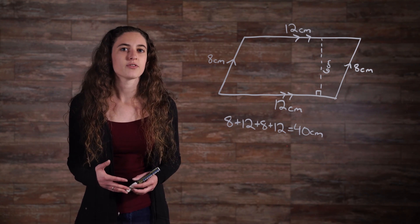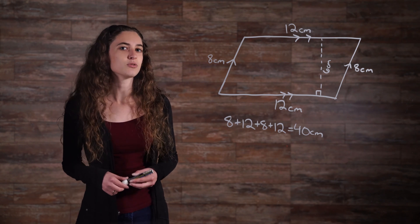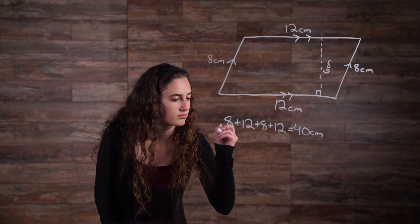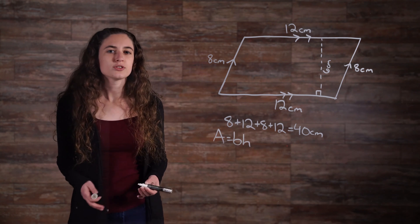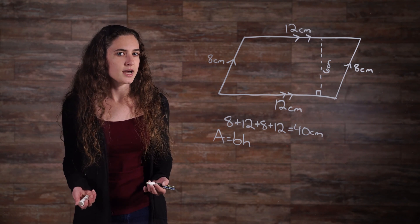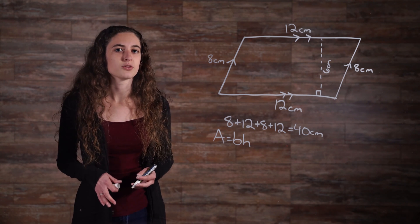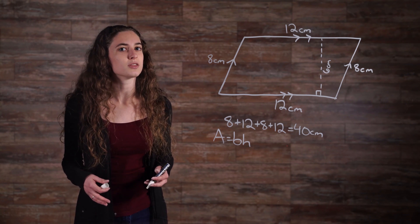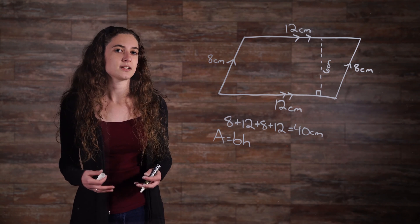The formula for the area of a parallelogram is very simple. A equals BH, or area equals base times height. But which of the numbers in our problem is the base and which number is the height? The key is to look at the dashed line with the right angle symbol. This is the height, which is sometimes called the altitude. In our sample problem, it is 6 cm.